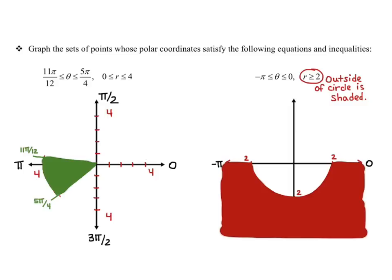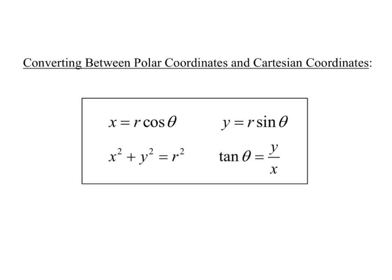Next, we'll look at how to convert between polar coordinates and Cartesian coordinates. Going back to trigonometry: cos θ = x/r and sin θ = y/r. This gives us the conversions: x = r cos θ, y = r sin θ, x² + y² = r², and tan θ = y/x. These are the four basic conversions you'll need to go from Cartesian to polar or from polar to Cartesian.